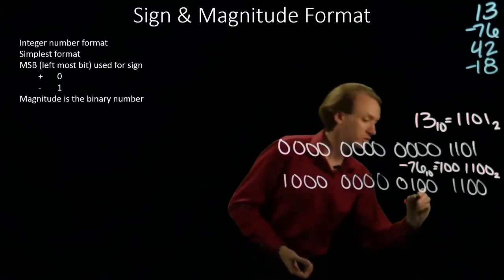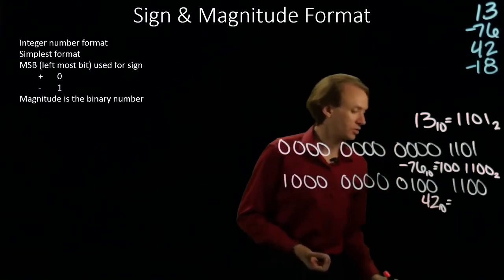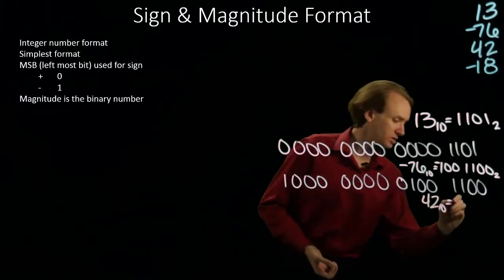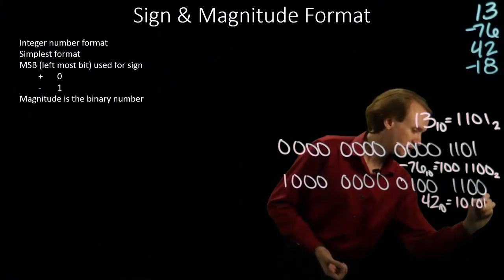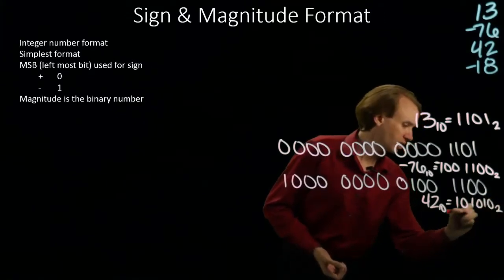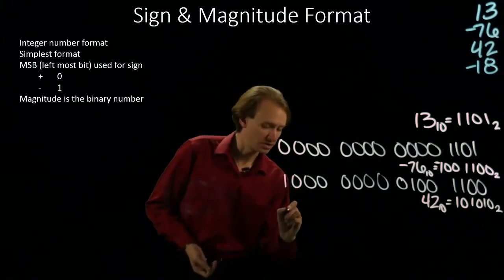Next number is 42. 42 in decimal is 32 plus 8 plus 2 in binary. And this is again a positive number, so my sign bit will be a 0.